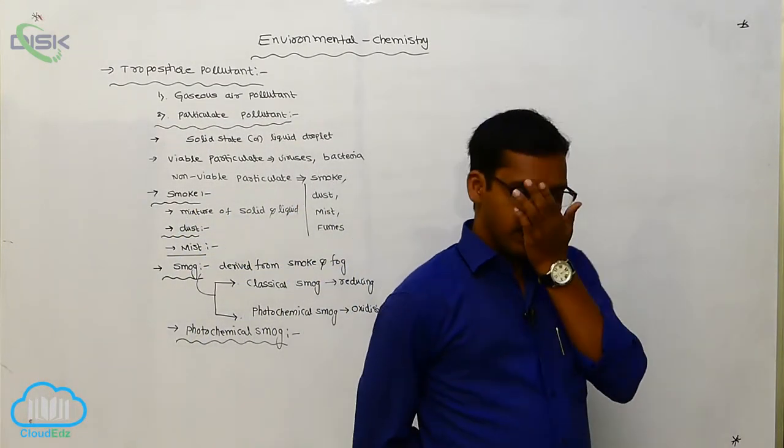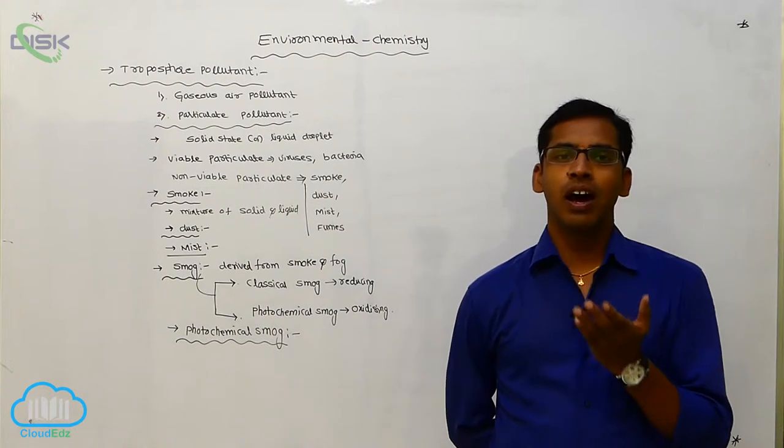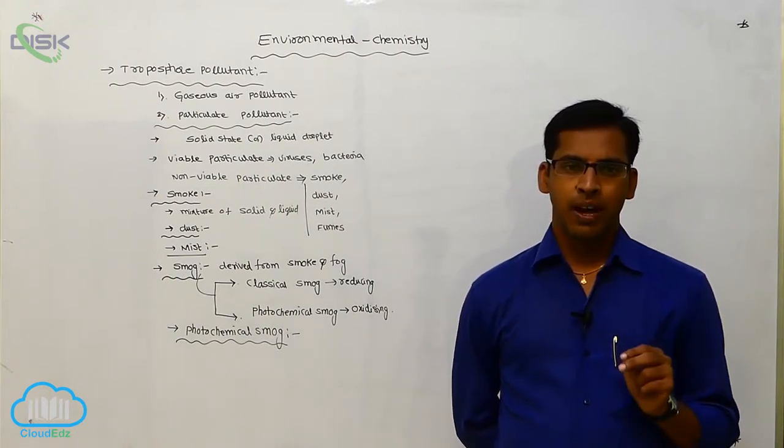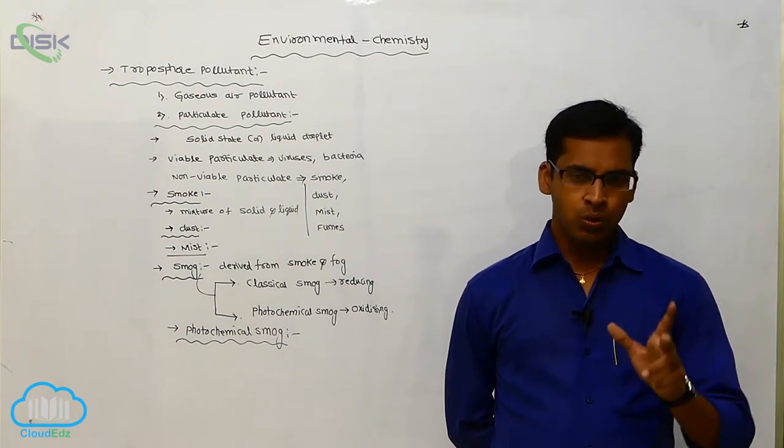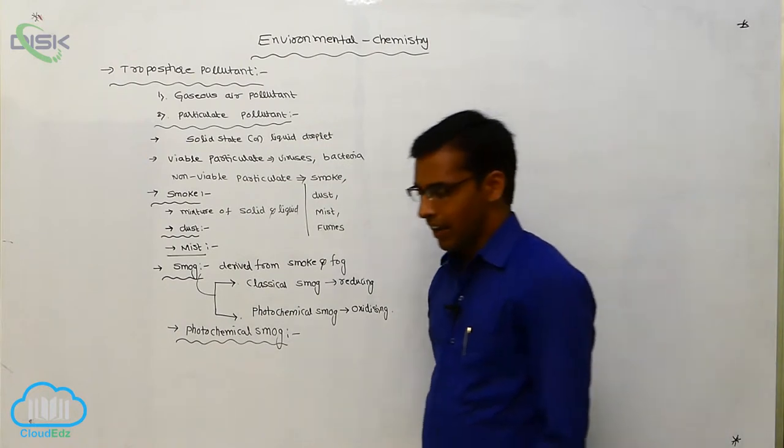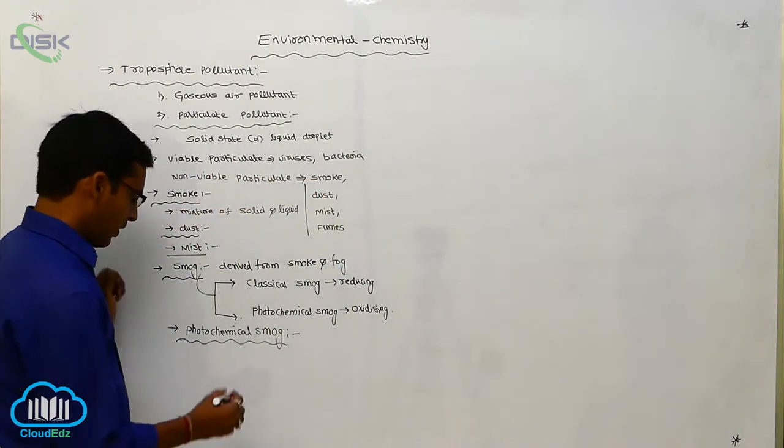Okay, now see here. This photochemical smog is produced due to two raw materials: one is hydrocarbon, and another one is oxide of nitrogen.